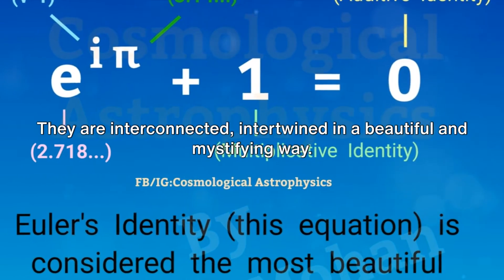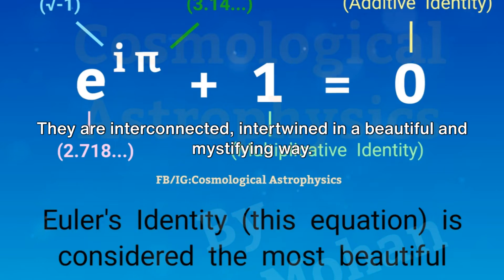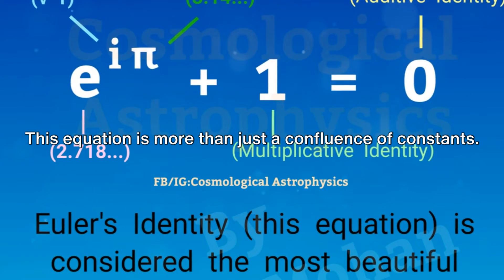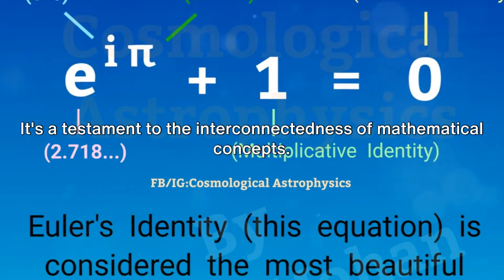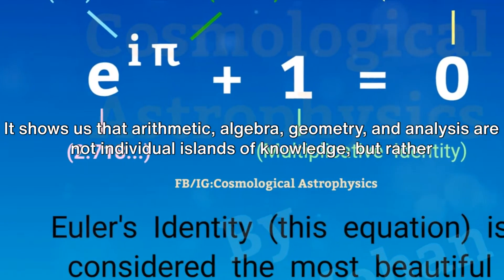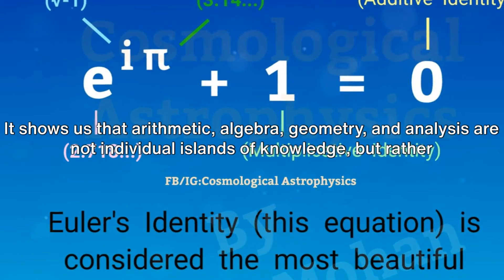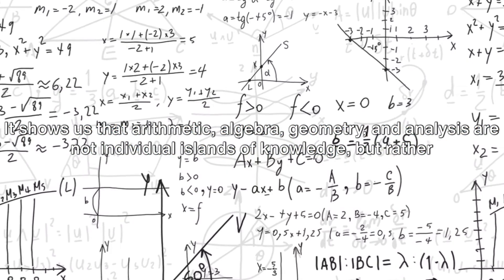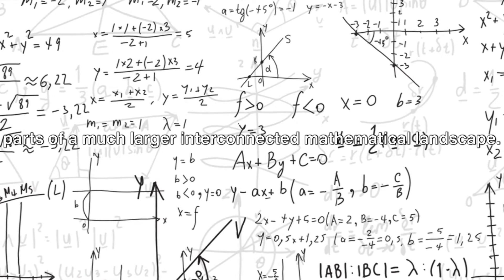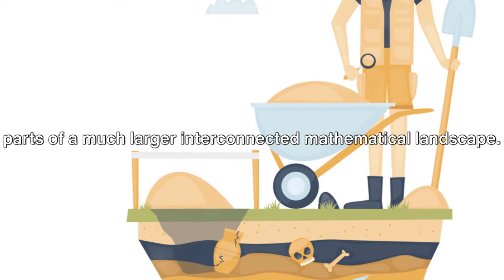This equation is more than just a confluence of constants. It's a testament to the interconnectedness of mathematical concepts. It shows us that arithmetic, algebra, geometry, and analysis are not individual islands of knowledge, but rather parts of a much larger interconnected mathematical landscape.